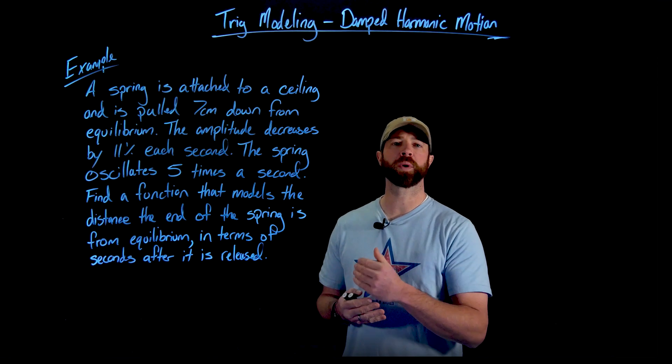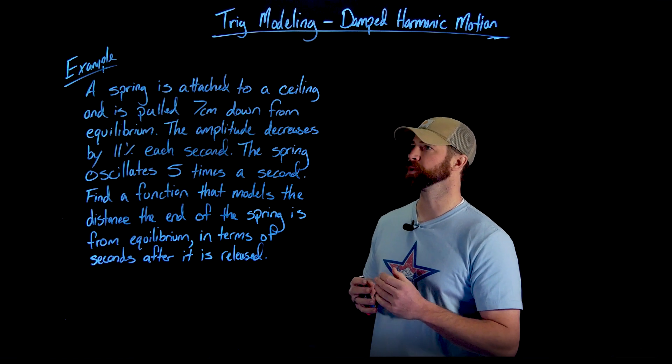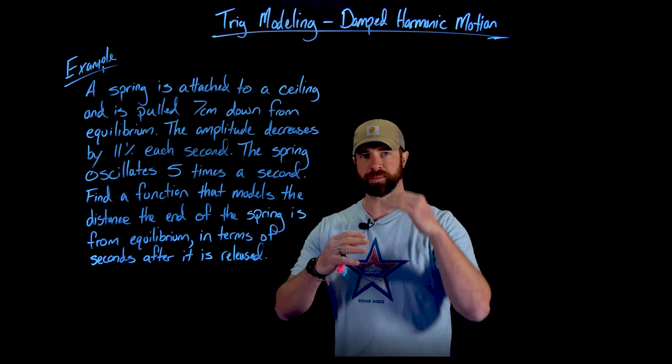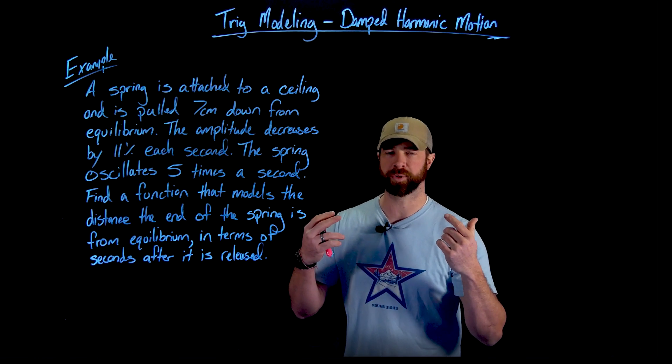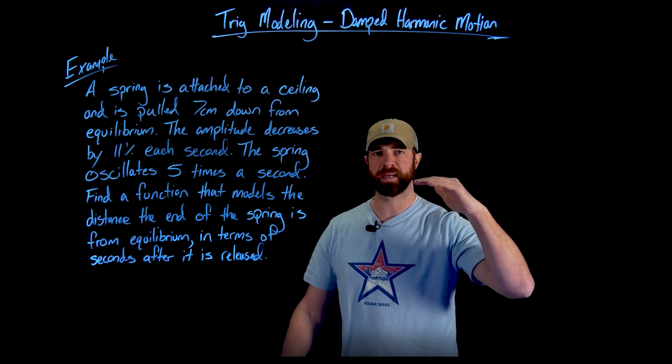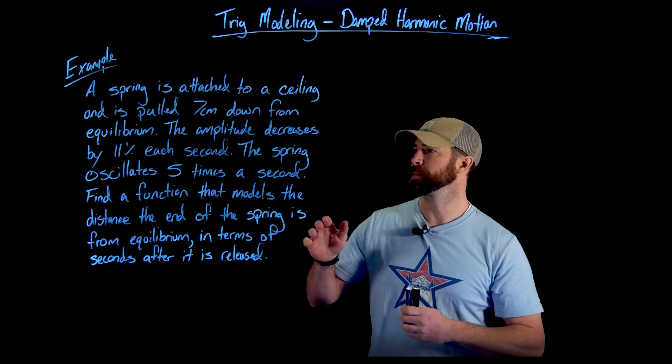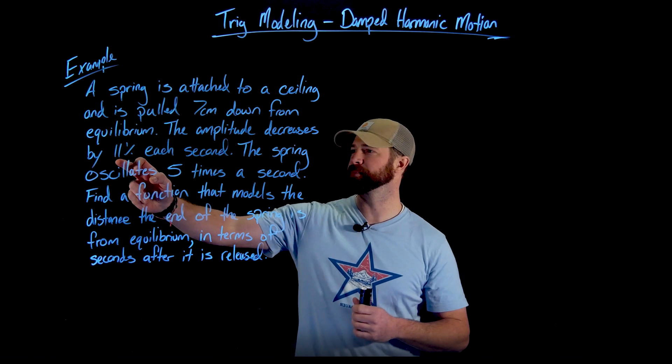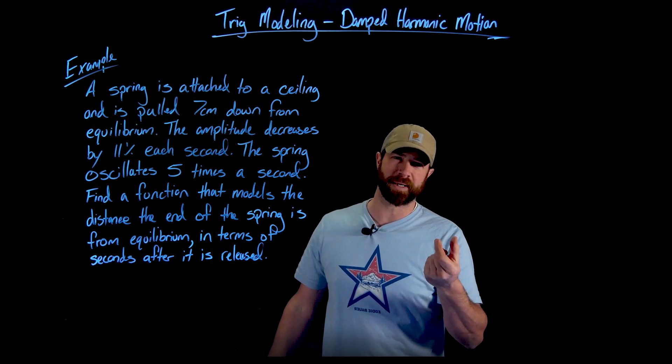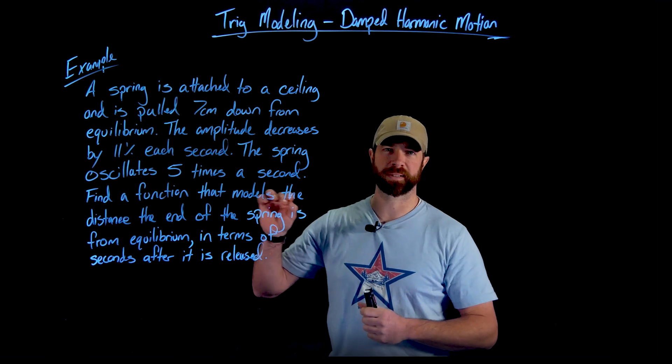So here we have our class example where we're going to model the motion of a spring with damped harmonic motion. In this case right here we're being told a spring is attached to a ceiling and is pulled seven centimeters down from equilibrium. Importantly here, just to give context, think of a spring that's hanging, think of a kind of a loose spring. You have a spring that's hanging by its own weight. Where it hangs naturally is called the equilibrium, but then we pull it down seven centimeters past that equilibrium. We're being told the amplitude decreases by 11 percent each second.